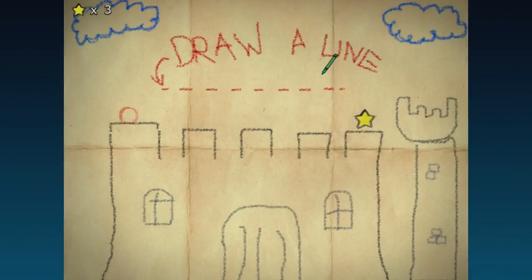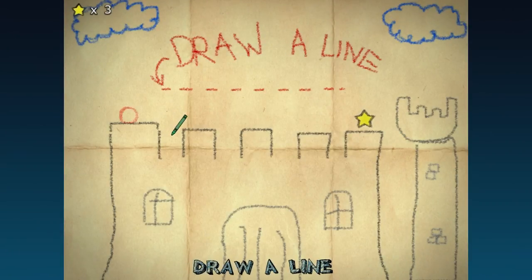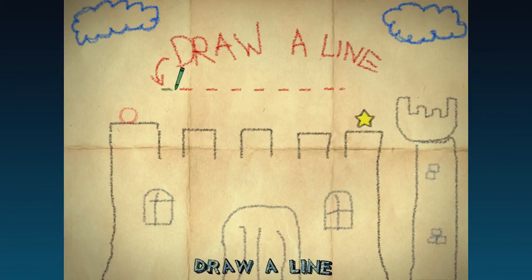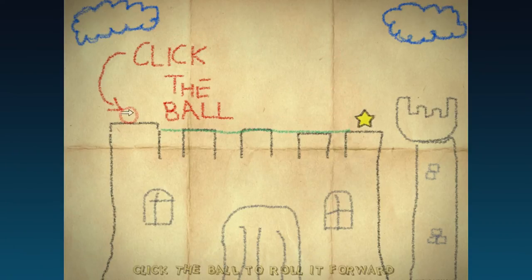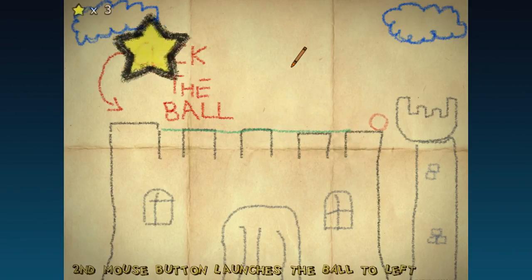So next up, we want to play this castle level. And it's telling us to draw a line, so it's just going to be a basic bridge, I think. And then it wants us to click the ball, which we've already discovered we can do. But, you know, whatever gets us through the level, I suppose.